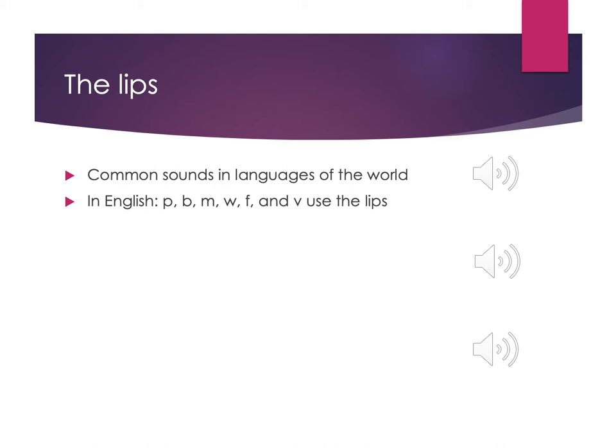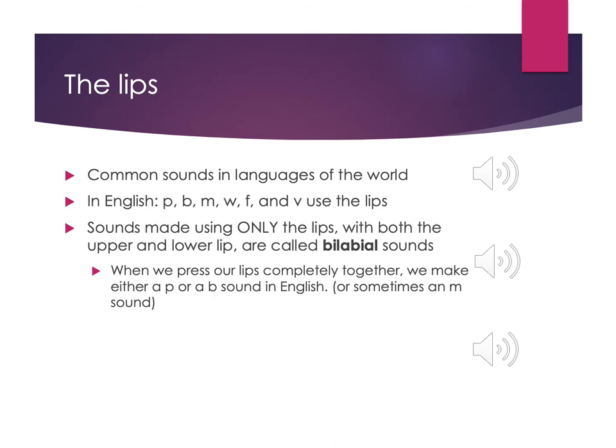In English, sounds typically spelled with P, B, M, W, F, and V all use the lips in some way. Sounds made using only both lips — upper and lower — are what we call bilabial sounds. Bi meaning two, labial meaning lip. Even terms that might seem difficult are usually named after the place they're describing, so you can link them together.